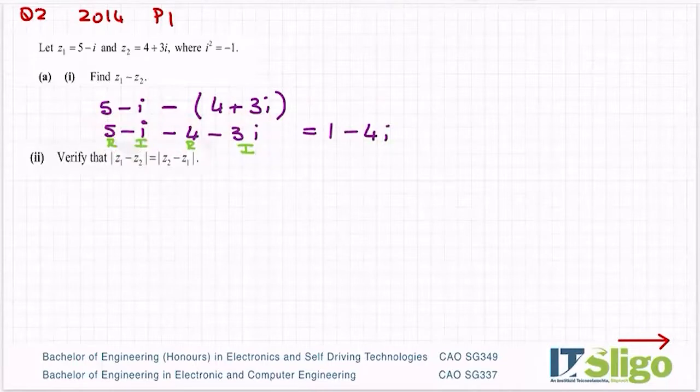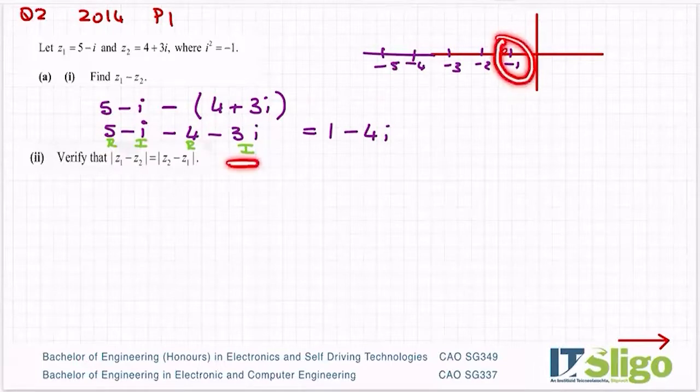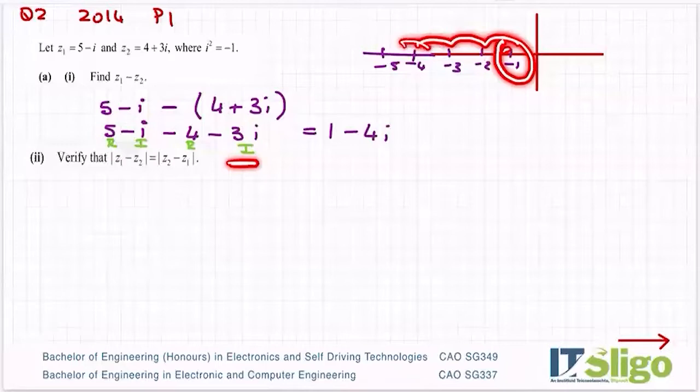So remember when you're subtracting on the negative scale, there's minus 1, minus 2, minus 3, minus 4, minus 5. If you're out here at minus 1i and you have to take 3 more from it, you're going out further. This is the minus direction. So that's why you end up at minus 4.